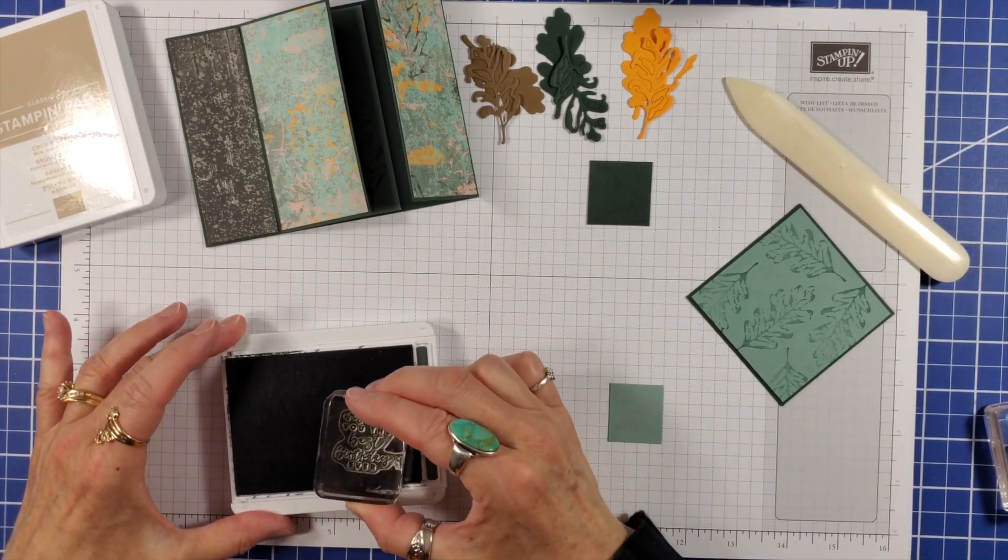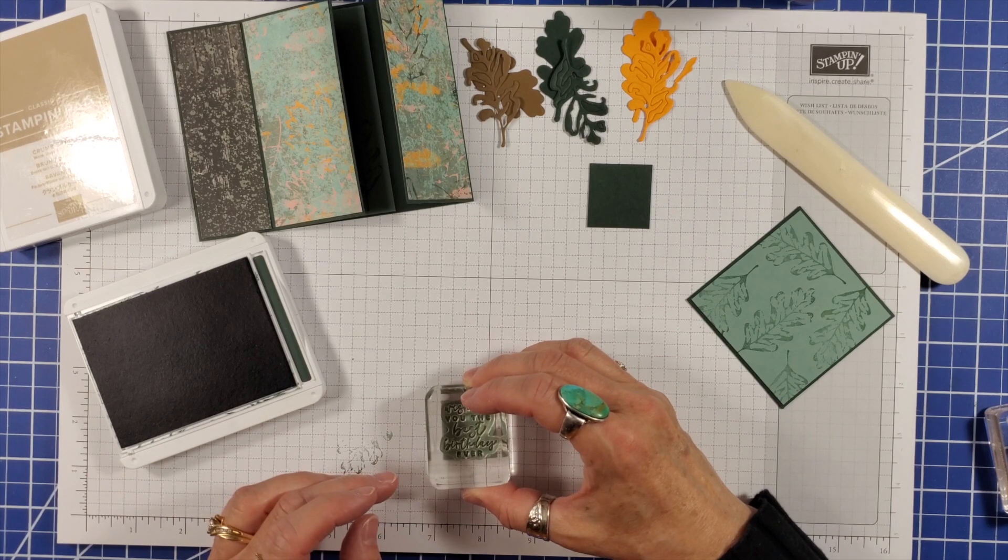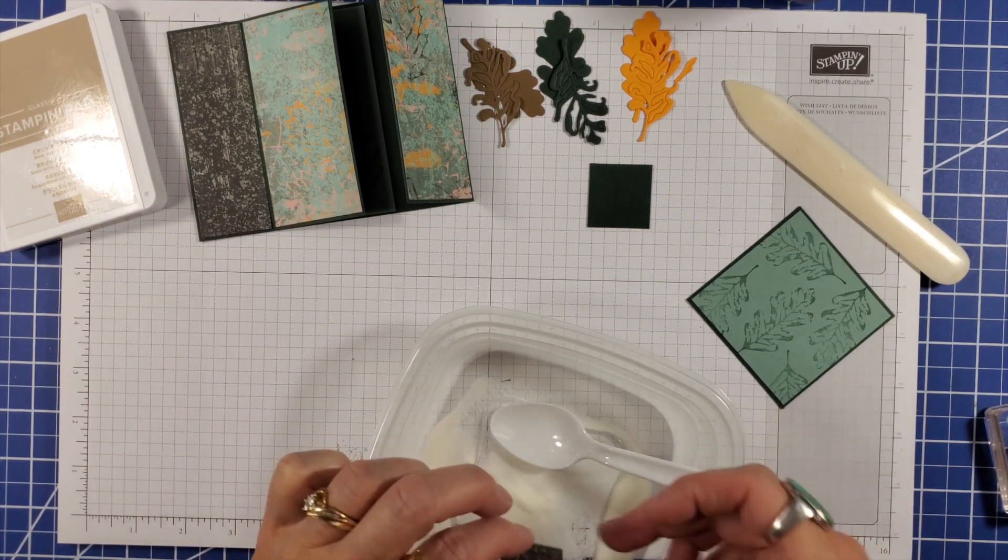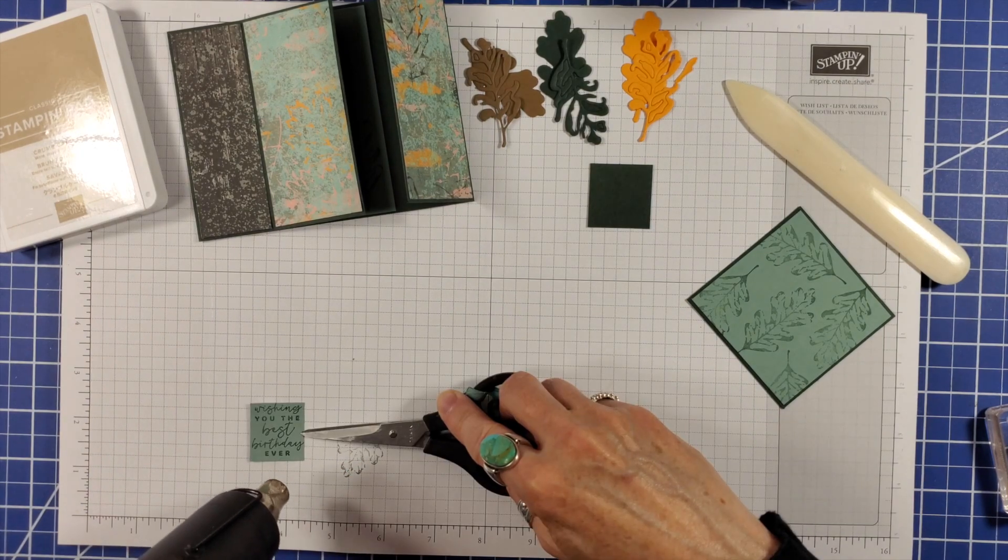I inked my sentiment in Versamark ink before inking it in evergreen ink. I sprinkled clear embossing powder on it, tapped off the excess and heat set it. Don't you love my fancy tweezers?